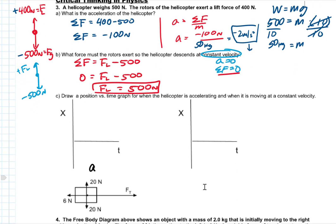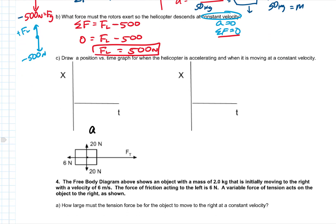Now we want to draw a position versus time graph for the helicopter when it's accelerating and when it's moving at constant velocity. On the left, for negative 2 meters per second squared acceleration, the helicopter moves down and it's a curve — curving downward because of negative acceleration. On the right, for constant velocity, the position graph is a straight line going downward at a constant rate.